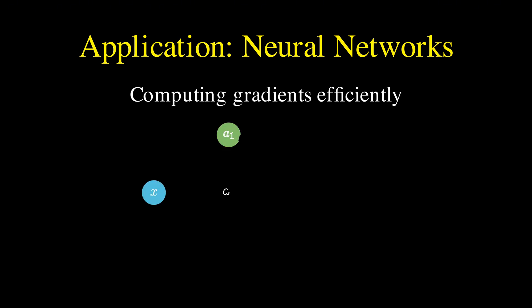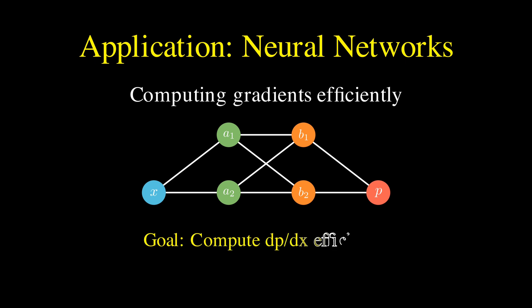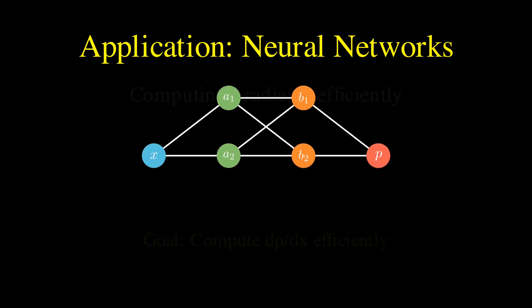Consider a simple neural network that takes a single input x and produces a single output p through a series of transformations involving hidden layers with multiple neurons. The network processes information in stages.